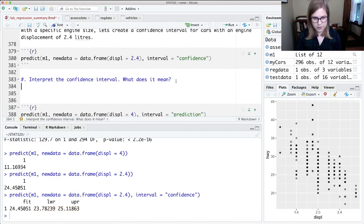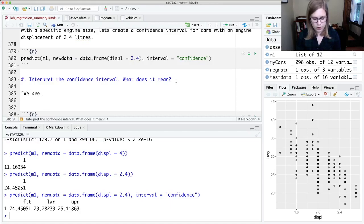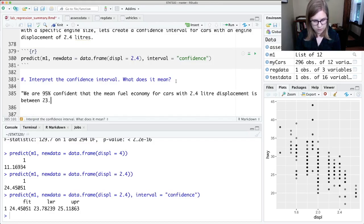If we were going to interpret the confidence interval, it would be: we are 95% confident that the mean fuel economy for cars with 2.4 liter displacement is between 23.78 and 25.12 miles per gallon. That's not a huge range, that's like a two mile per gallon range.